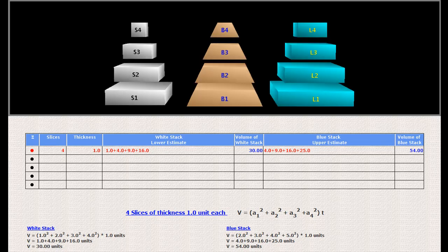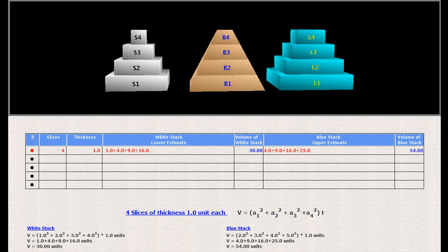Imagine dividing the pyramid into 4 slabs of thickness 1 unit each. The slab B4 has a top face of side 1 unit and a bottom face of side 2 units. Had its side been 1 unit throughout, its volume would have been 1 cubic unit, and this is the volume of the slab S4 shown at the left.